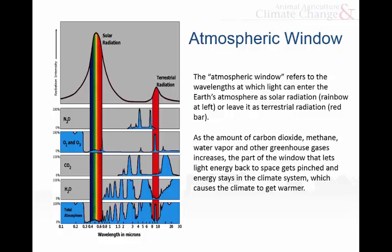For the other atmospheric window — the one that controls the energy leaving the earth and going back out into space — that's controlled by things like carbon dioxide and methane. Here's the nitrous oxide, here's carbon dioxide. If you put all those together, there's a fairly short range of wavelengths that allows light from the earth to go back up into space. As you add more carbon dioxide or methane, it kind of pinches off that window, trapping radiation near the ground and causing the temperature to go up.